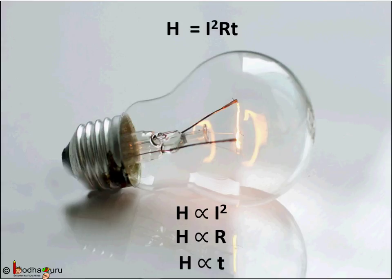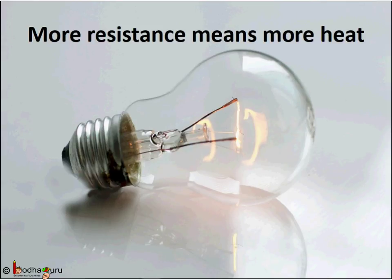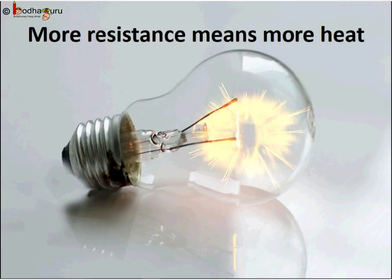If resistance is higher, more heat is produced. Heater and bulbs work on this principle. That is why the filament of the bulb is made of tungsten which has high resistivity rho and tungsten has high melting point close to 3380 degree centigrade, hence it does not melt at such high temperature.